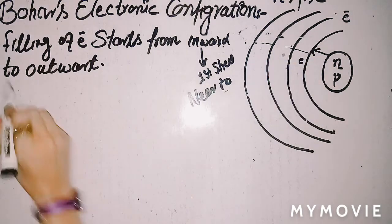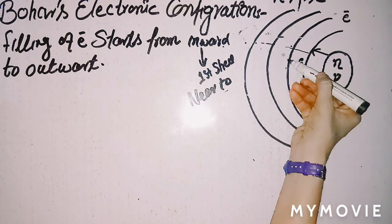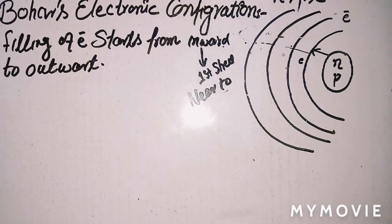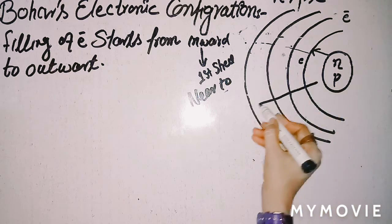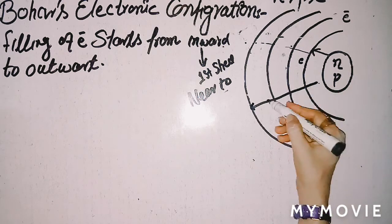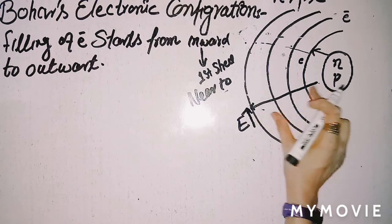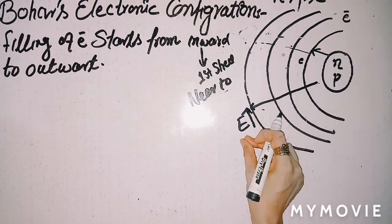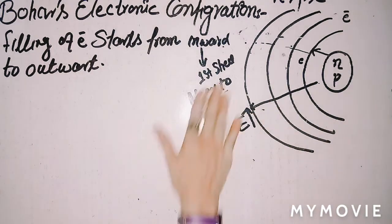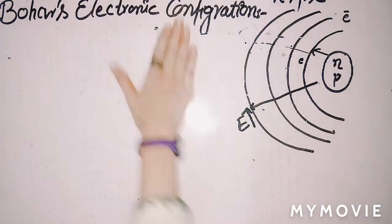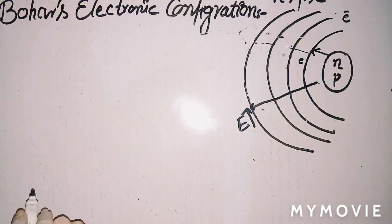When filling the electrons, you start from the first shell nearest to the nucleus and then move outward to the second, third, and so on. The energy level increases in this order — from lower to higher energy. On the basis of increasing energy order, electrons fill the shells in sequence.